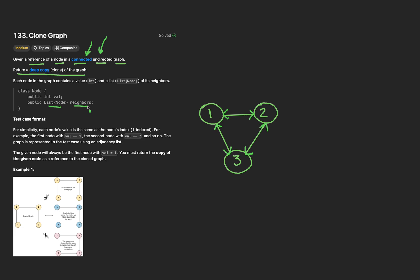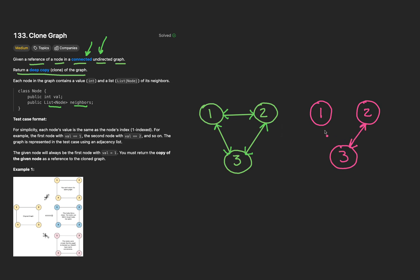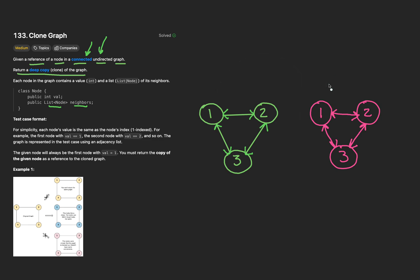That wraps up the technical terms. In short, given a reference to an input node — we'll go with node 1 — we need to create the corresponding new nodes. At node 1 we'd create new node 1, then when we get to node 2 we'll create new node 2, and when we traverse to node 3 we'd create new node 3. Don't forget to create the undirected edges as well. We'll return the mapped new node from the old given node.